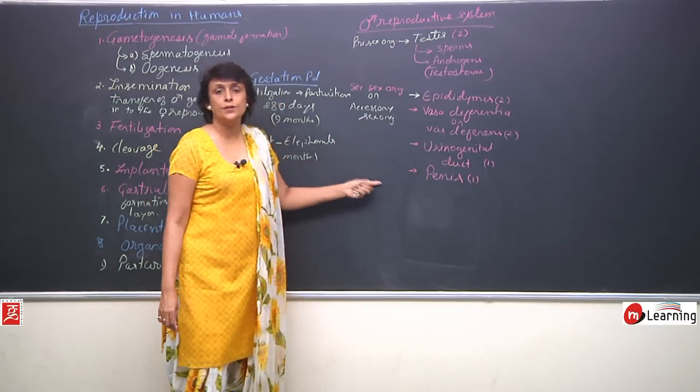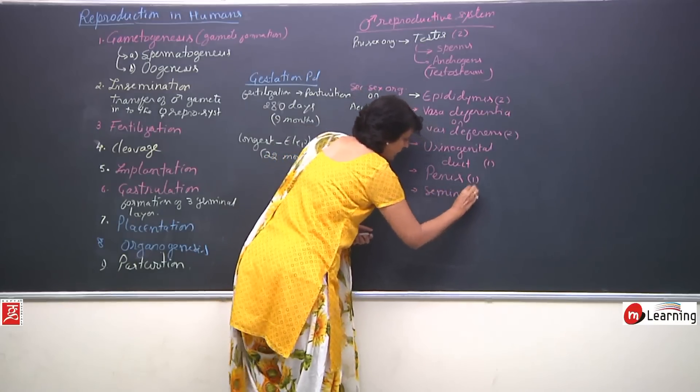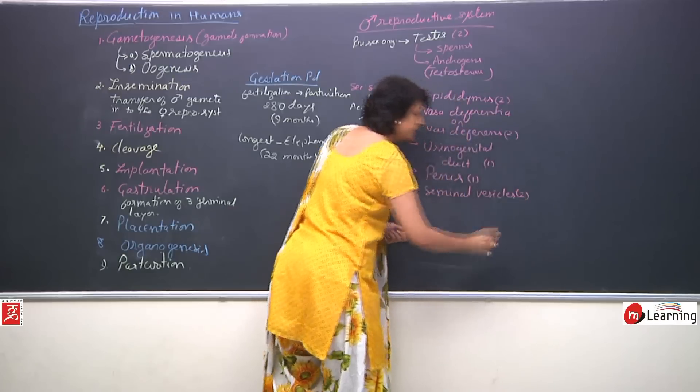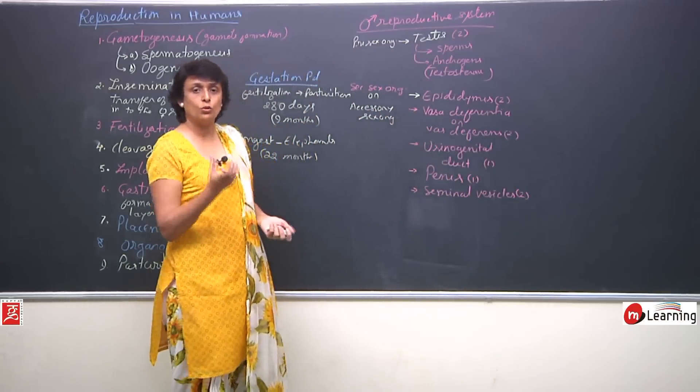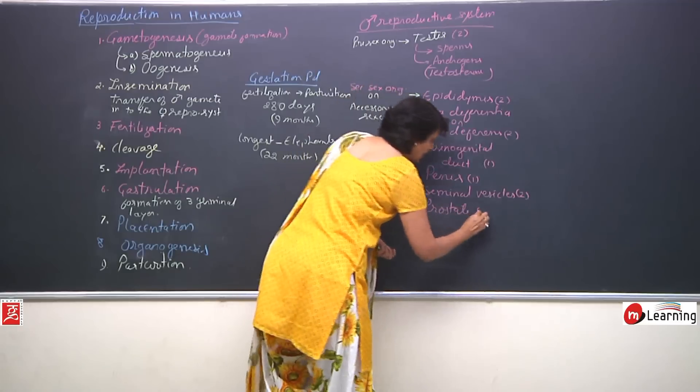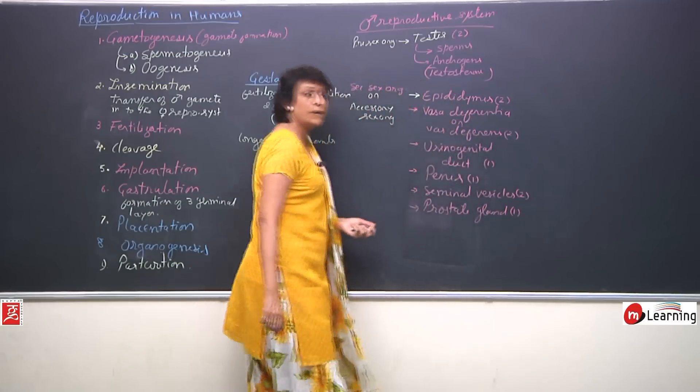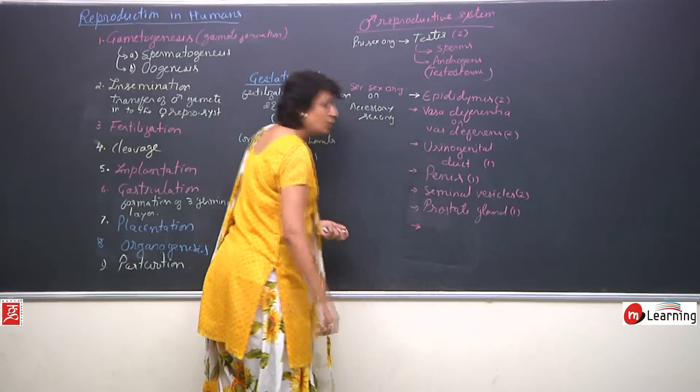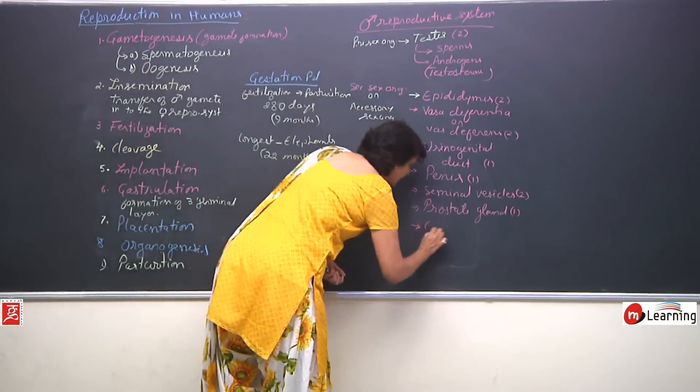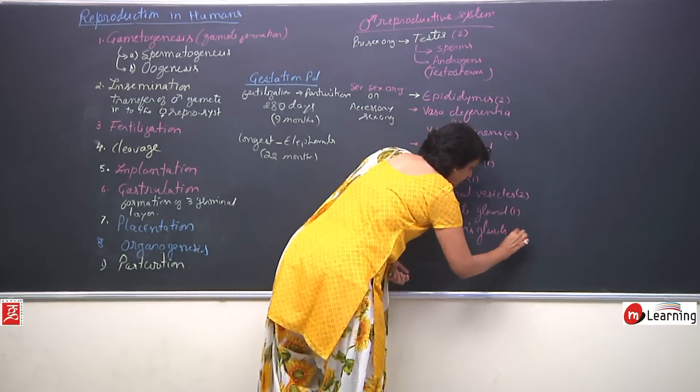Along with these structures there are some glands which help. Some seminal vesicles, one on each side so again 2 in number. Then there is a chestnut or a doughnut shaped gland which is known as prostate gland, it is single. So, let us write 1 here and there are 2 again, a pair of very small peanut shaped glands which are known as Cowper's glands, 2 in number.